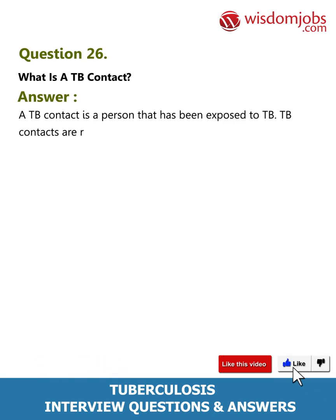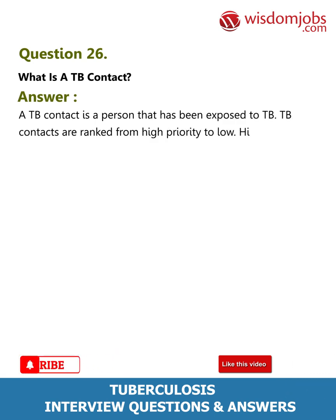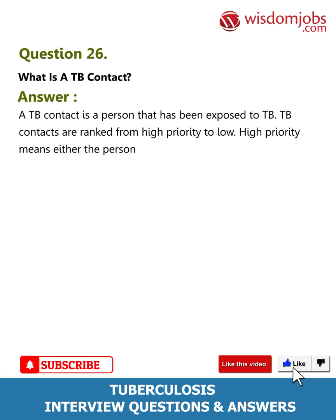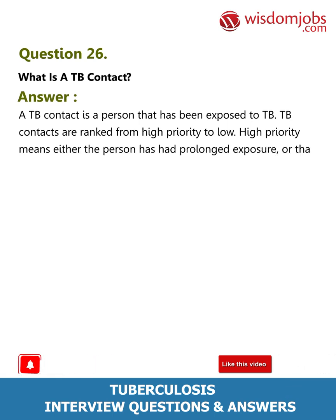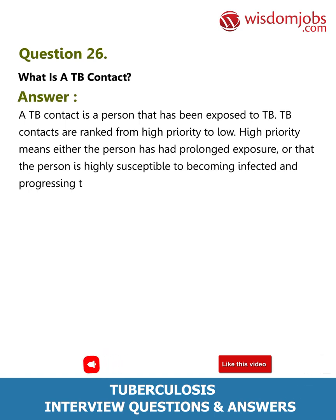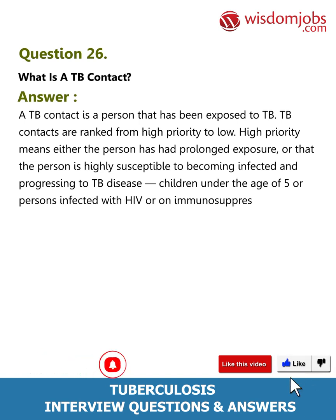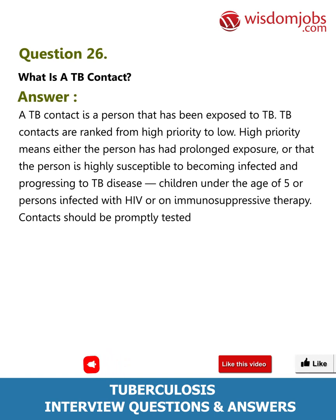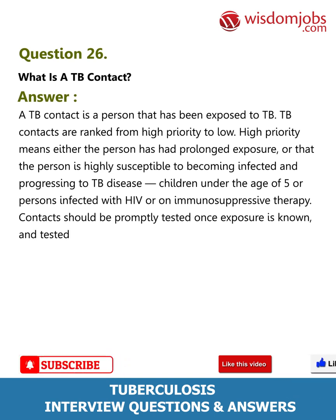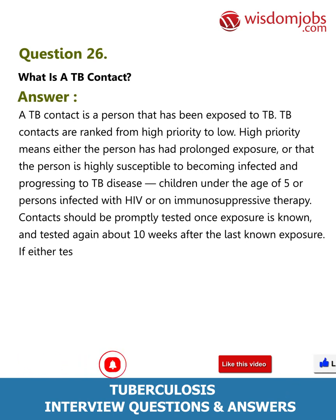Question 26: What is a TB contact? Answer: A TB contact is a person that has been exposed to TB. TB contacts are ranked from high priority to low. High priority means either the person has had prolonged exposure, or that the person is highly susceptible to becoming infected and progressing to TB disease — such as children under the age of five, or persons infected with HIV or on immunosuppressive therapy. Contacts should be promptly tested once exposure is known.